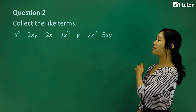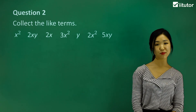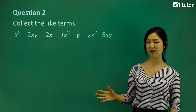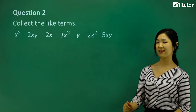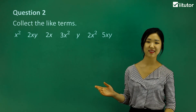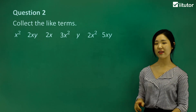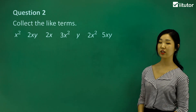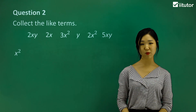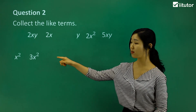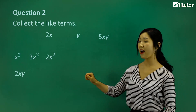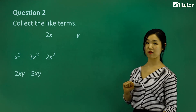Question two — collect the like terms again. This time we have more, with lots of x's and y's, so don't get confused. A lot of people might think that everything with an x or y in it is a like term, but it's not that simple. I'm going to start with my x squared — everything that ends in x squared I group together. Then anything that ends in xy I group together.